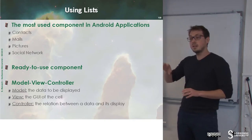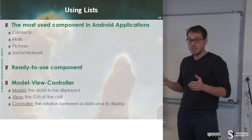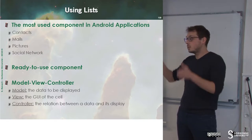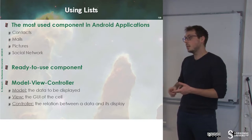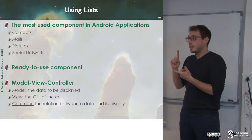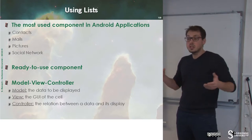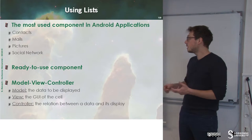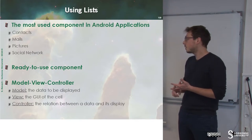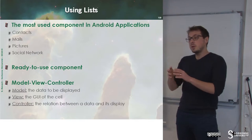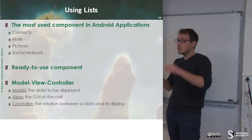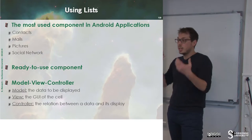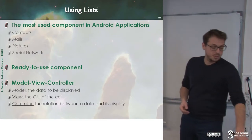We have a model-view-controller scheme. The view will be the list to display. The model will be a set of classes or a database we want to use. And the controller will be the activity that will manage the interaction between the UI and the model.